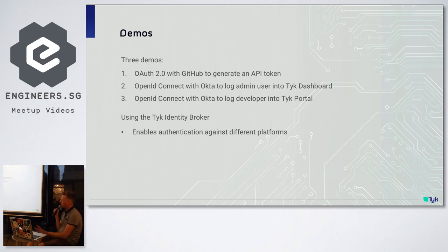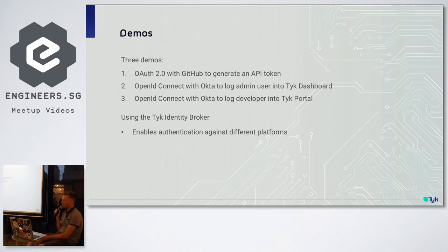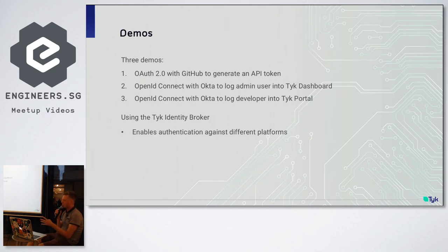So enough of the slides — I'm going to now do some demonstrations. What I'm about to demonstrate is three things: first, using OAuth 2 with GitHub to generate an API token; second, using OpenID Connect with Okta to log admins into the Tyke dashboard; and third, using OpenID Connect with Okta to log developers into the Tyke portal. These demos are going to use a standard Tyke setup which includes a component called the Identity Broker — a component which allows Tyke to authenticate against different platforms. It's open source and comes with connectors for different social platforms. Don't confuse the Identity Broker with an Identity Provider — the broker is the Tyke component, and the provider is something like Okta.